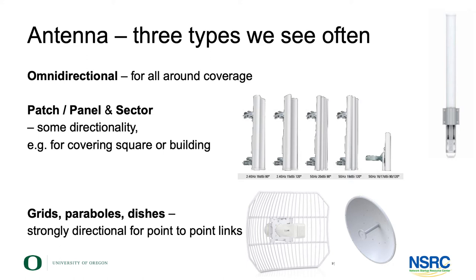Highly directional antennas — grids, parabolics, dishes — make really sharp beams. They still have a certain beam width, but they're quite directed. It's like a torch that you point in one particular direction.